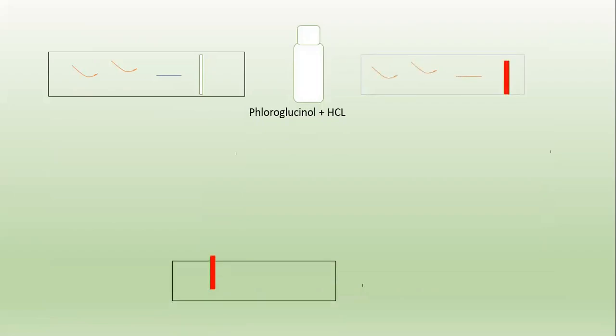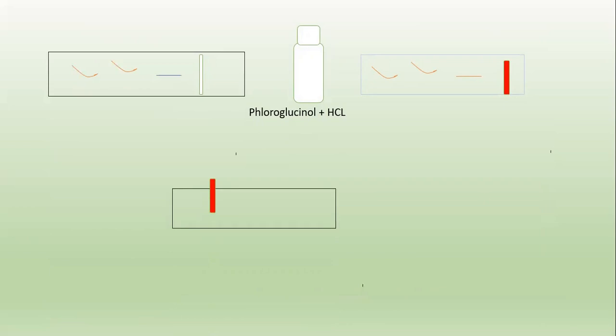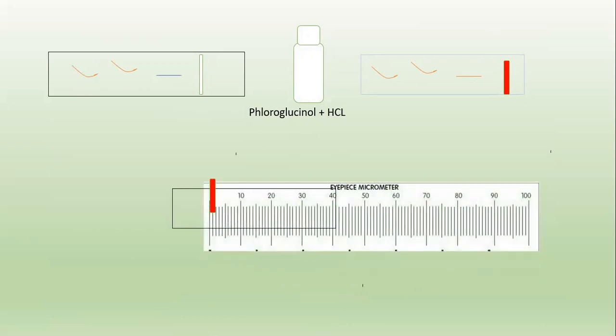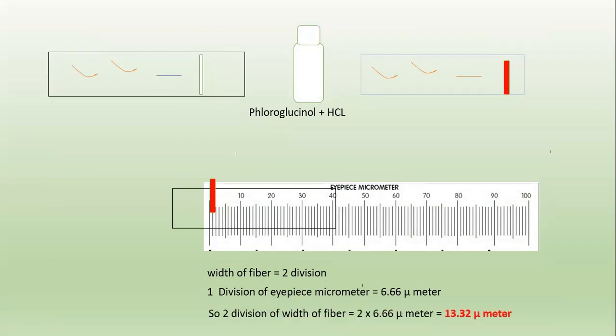Next, how to determine the width of the fiber. This fiber is stained by using chloro-gibson or HCl, which gives a pink or red color. We take this fiber and set it across the micrometer scale. The total width comes to two divisions. So the width of the fiber is two divisions. One division of the eyepiece micrometer equals 6.66 micrometers, so two divisions equals 2 multiplied by 6.66 micrometers, which is 13.32 micrometers.